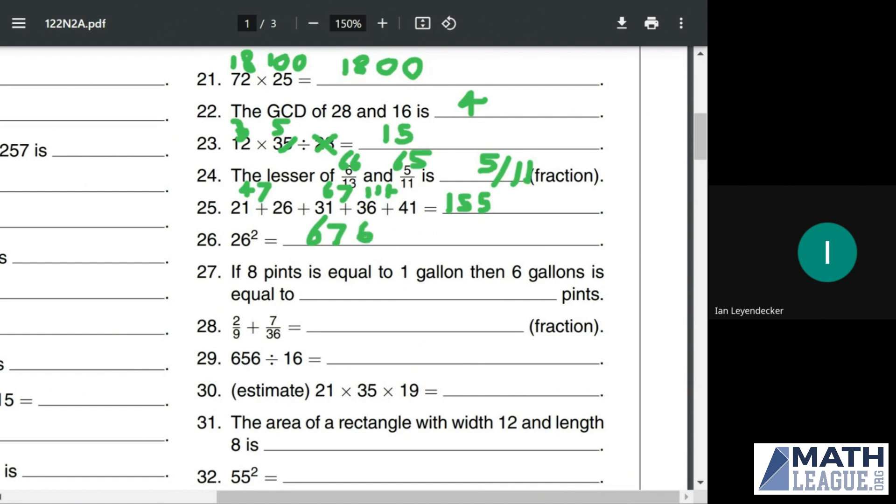If 8 pints is equal to 1 gallon, then 6 gallons is equal to how many pints? If 1 gallon is 8 pints, then 6 gallons will be 6 times that, or 48 pints.